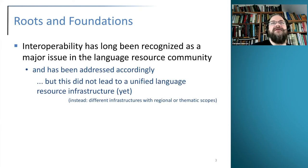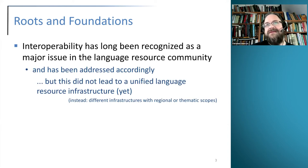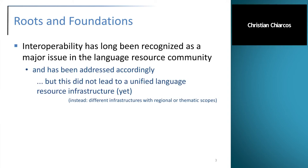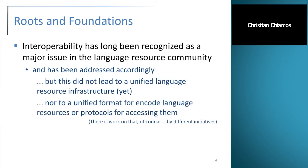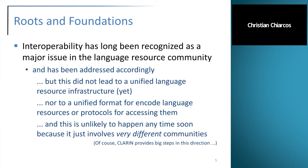Interoperability has long been recognized as a major issue in the language resource community and has been addressed accordingly. However, so far this did not lead to a unified language resource infrastructure — instead we have different infrastructures with regional or domain scope, and it did not lead to a unified format to encode language resources or to protocols for accessing them. There are proposals, but from different communities and initiatives, and they are only partially interoperable.